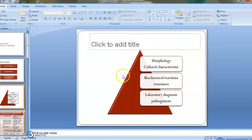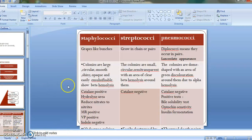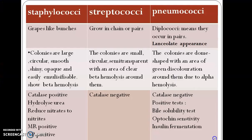We are going to look at all these subjects: morphology, culture characteristics, biochemical reactions, resistance, laboratory diagnosis, and pathogenesis. As you are watching, I have put everything in a tabular form for comparison, so when you are reading these subjects there are fewer doubts. So let's continue.